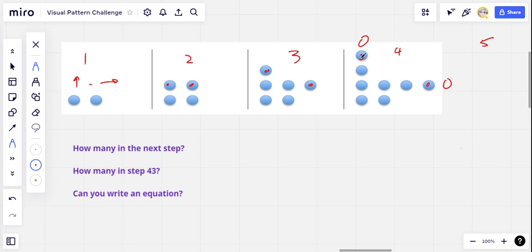So that would be one, two, three, four, five, six, seven, eight, nine, ten. So I'm going to predict ten dots in step five.